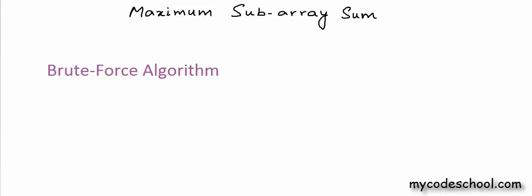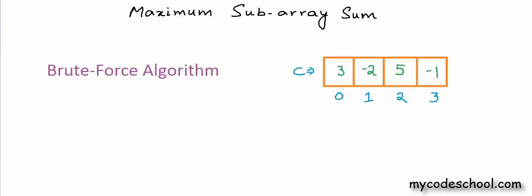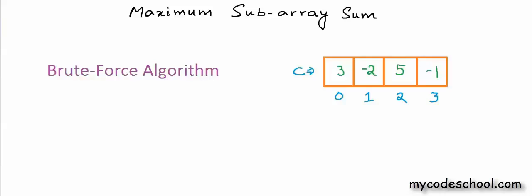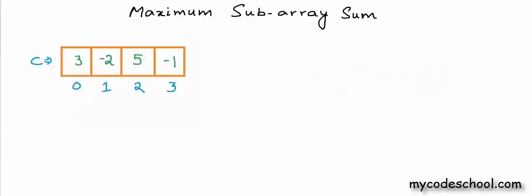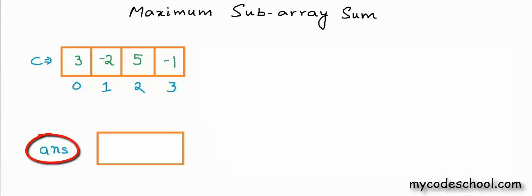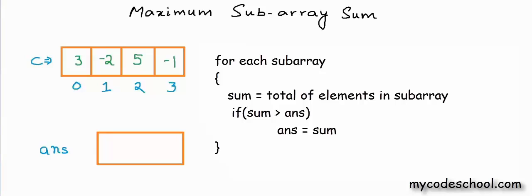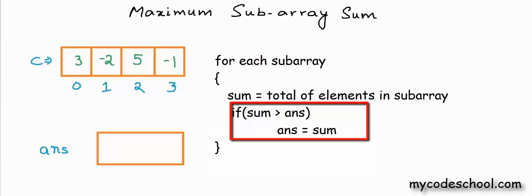The first approach we are going to discuss is a brute force algorithm. We are going to form all possible subarrays, find their sum and find the maximum. We will take a variable called ANSWER. As we iterate through each subarray, we will calculate each of its sums. ANSWER will store the maximum of these sums seen so far. Each time we calculate the sum of a subarray, we compare it with the value in ANSWER. If it is greater, then we update ANSWER with the sum that we just computed.